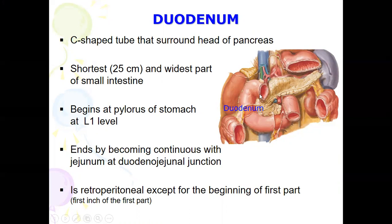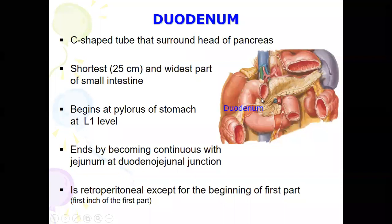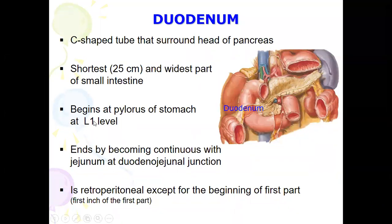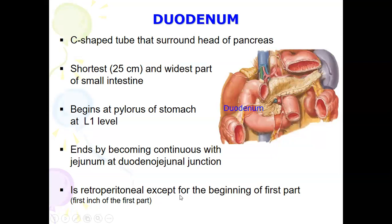The duodenum begins at the level of L1 at the transpyloric plane. The duodenum is a retroperitoneal organ, except for the first inch of the first part, which is an intraperitoneal organ. The remaining part is a retroperitoneal organ.